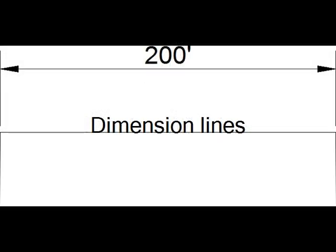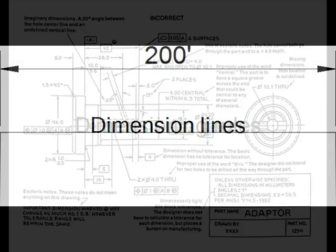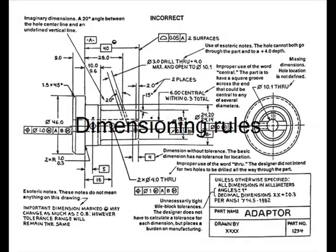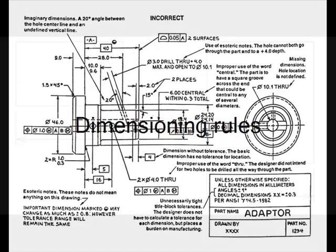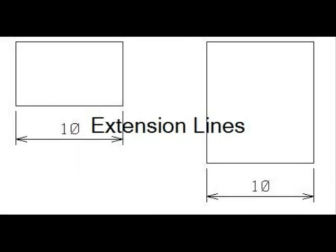Dimension lines show distance, and there are a total of 16 different dimensioning rules. Extension lines show where a dimension starts and stops.